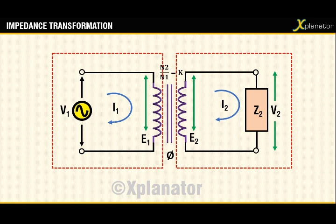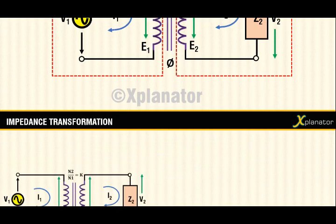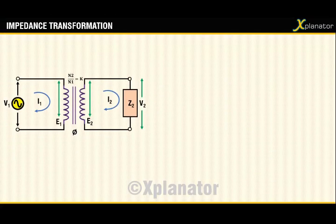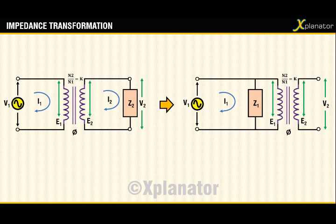Let us say you have this circuit and for making analysis simpler you are going to convert it to this form. Now since you are adding z1 on the primary side and removing z2 from the secondary side, the value of z1 will not be the same as z2 — it will be somewhat different. What is it? Let's find out.